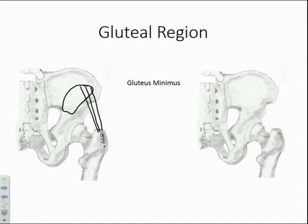As a result, even though it might be hard to appreciate with this two-dimensional diagram, gluteus minimus is certainly going to be an abductor of the thigh. What might be surprising is that it's actually going to be a medial rotator of the thigh, even though we're drawing it along the posterior aspect. A demonstration class will explain this more clearly.